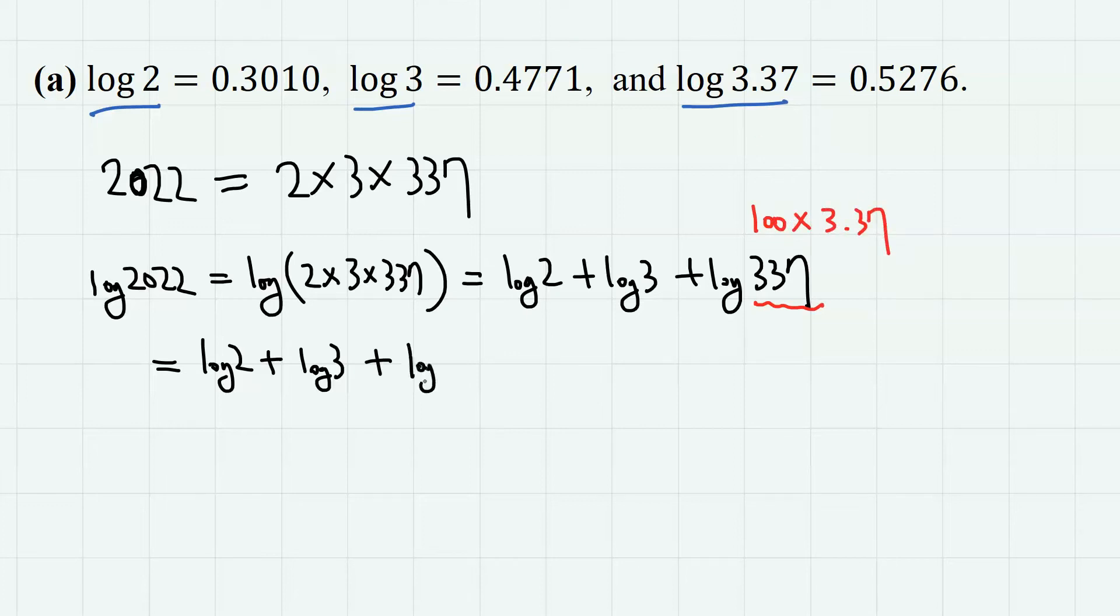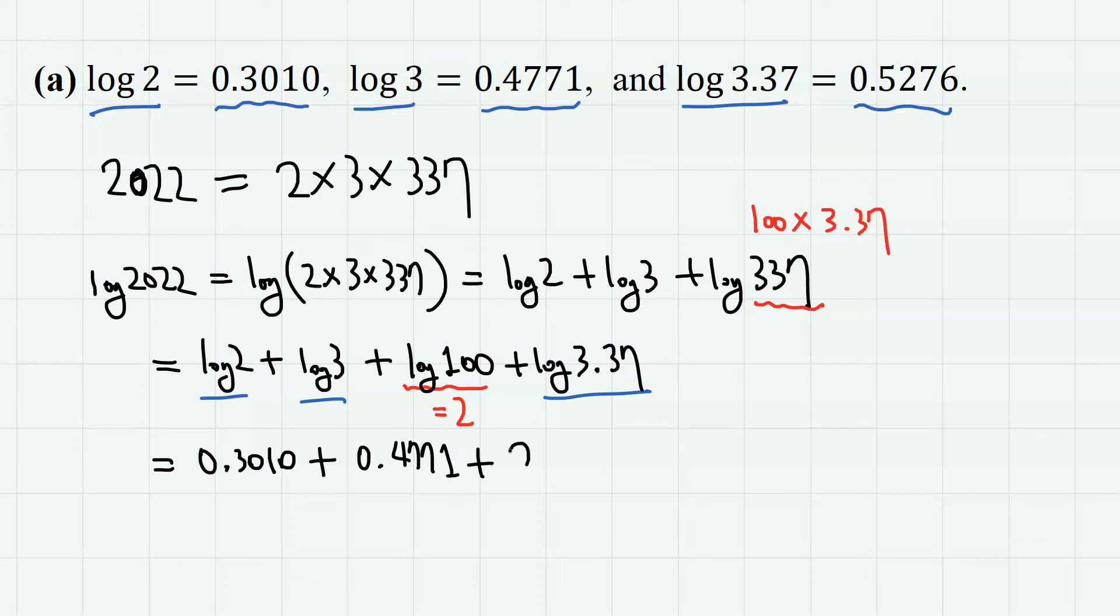So we have log 2 is 0.3010, log 3 is 0.4771, log 100 is 2, log 3.37 is 0.5276. If we add them up, we have 3.3057.